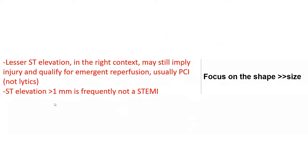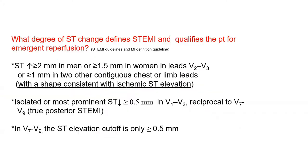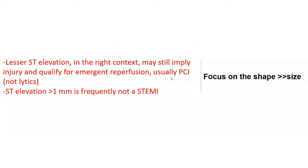More importantly, lesser ST elevation — lesser than those cutoffs — in the right context may still imply injury and qualify for emergent reperfusion, usually PCI. You cannot qualify for lytics if you're below those cutoffs, but you can qualify for emergent PCI below those cutoffs if you have the proper morphology and shape. Conversely, ST elevation over 1 to 2 millimeters is frequently not a STEMI — it could be pericarditis, early repolarization, LVH, or left bundle branch block. So it's very important to focus on the shape.